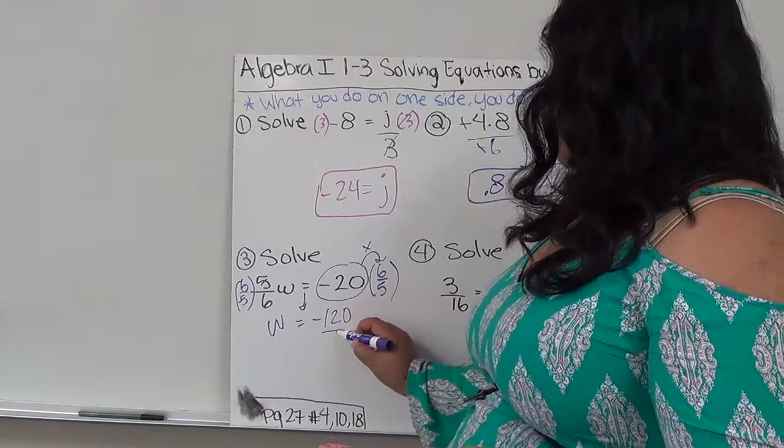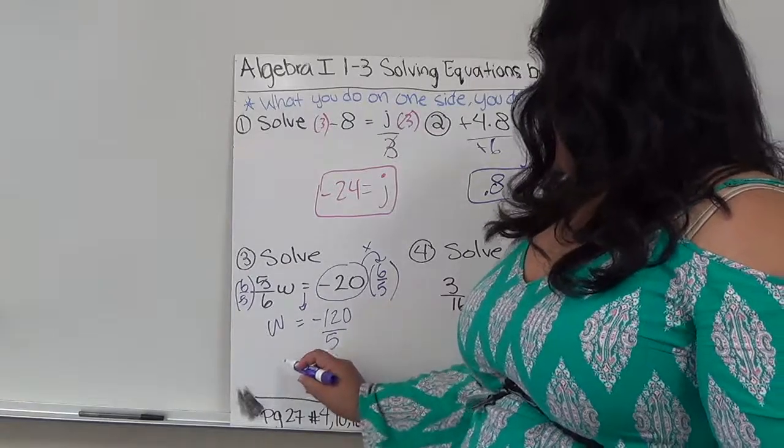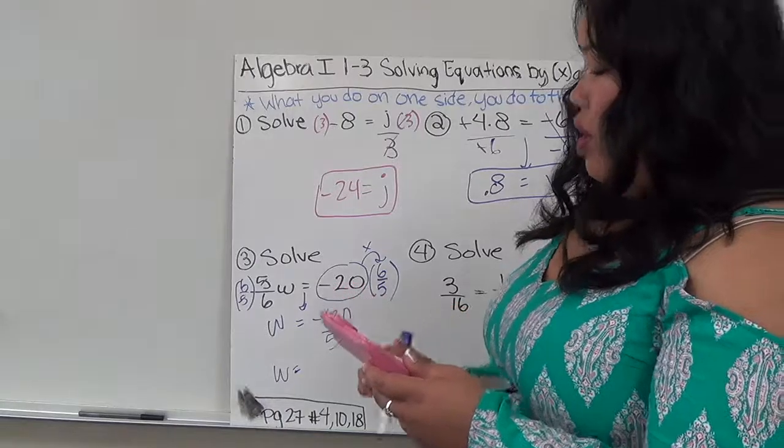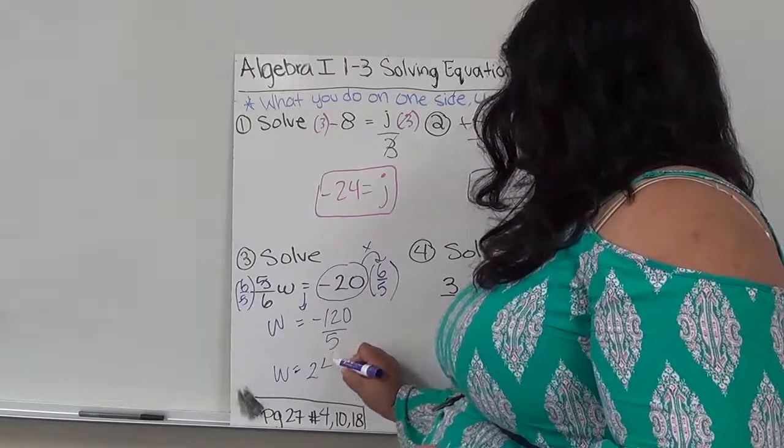So negative 120 over 5. So then, from there, I just divide it, negative 120 divided by 5, which gives me negative 24.